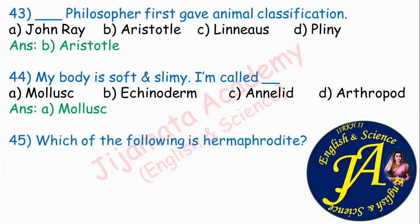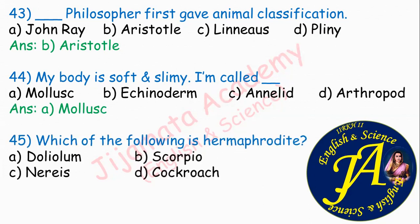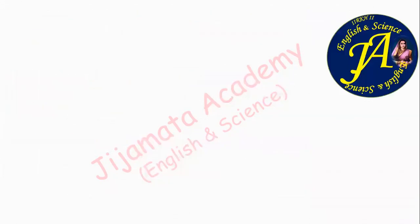Which of the following is hermaphrodite? Hermaphrodite means bisexual — both male and female. Options are Doliolum, Scorpio, Nereis, Cockroach. Correct answer is option C: Nereis. Annelids are hermaphrodite, and Nereis belongs to annelida. Therefore, correct option is option C: Nereis.